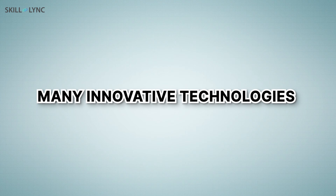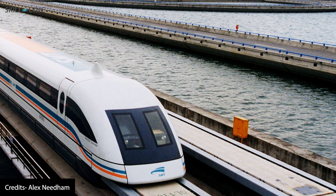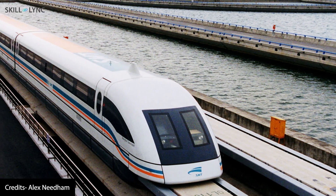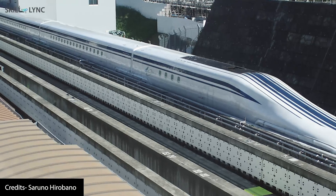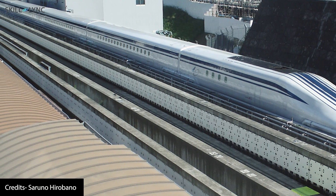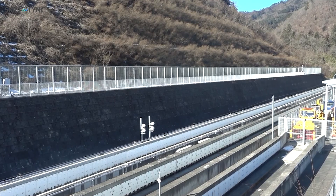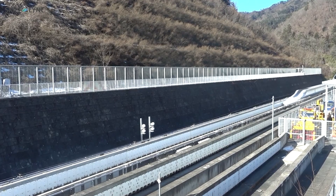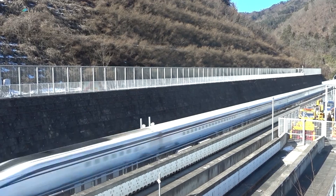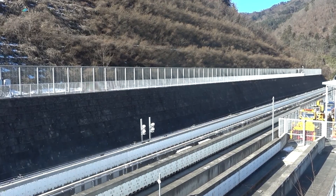Many innovative technologies have been devised to eliminate rolling friction. One such technology is the magnetic levitation, or the maglev. The maglev works by lifting the entire vehicle off the ground with the help of magnets and propelling it forward. Maglev trains are known to clock very high speeds — as fast as 600 km per hour. This is partially made possible because maglev trains have no wheels, meaning no rolling resistance, and all that saved energy can be used to propel the vehicle forward.